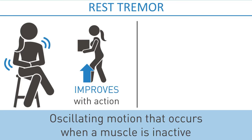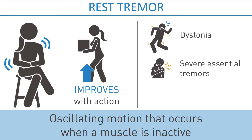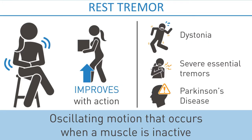Although rest tremor can be seen in patients with dystonia and severe essential tremor, the most common cause of rest tremor is Parkinson's disease. When a unilateral rest tremor is present, assessment for other signs of Parkinson's disease should be performed.